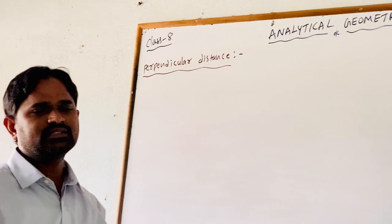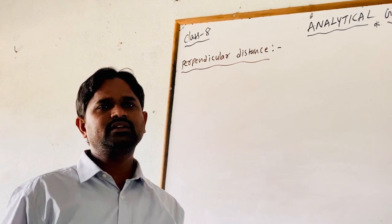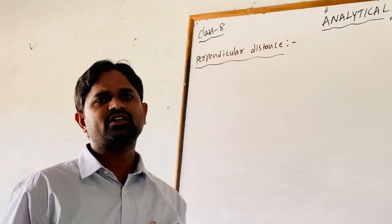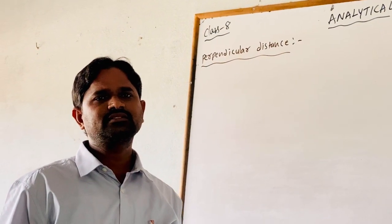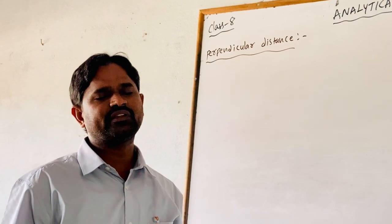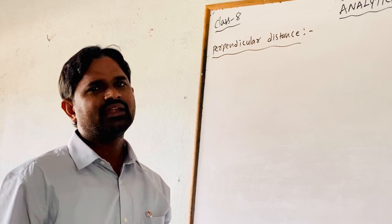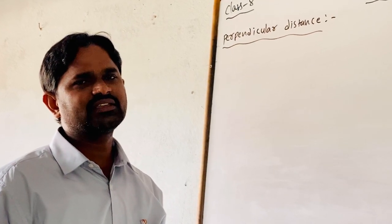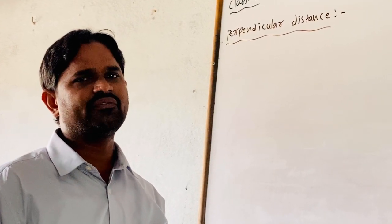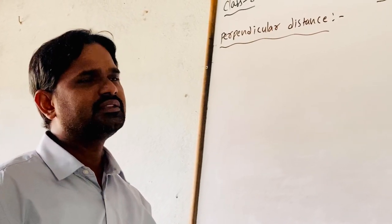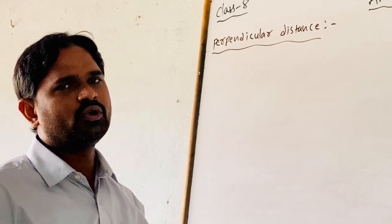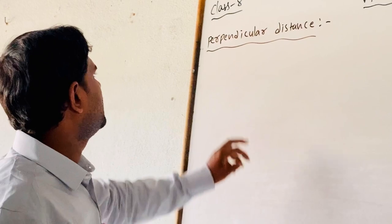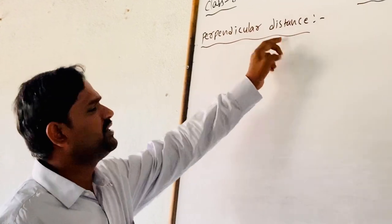In the previous class, we discussed transformation of axes. There are two types of transformations: translation of axes and rotation of axes. Then, about a straight line and perpendicular distance.